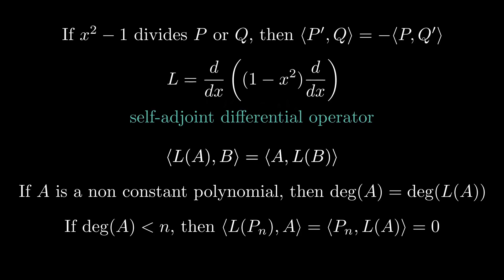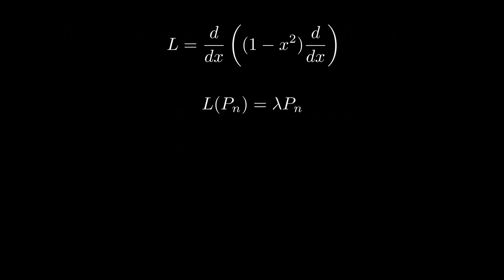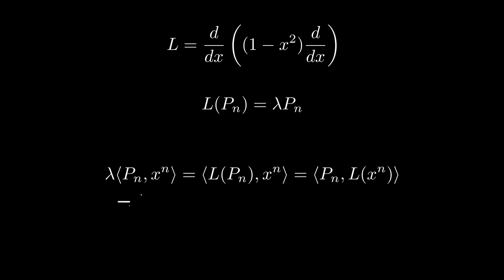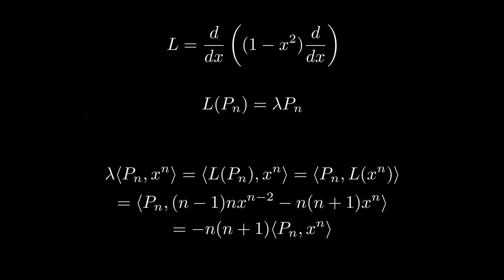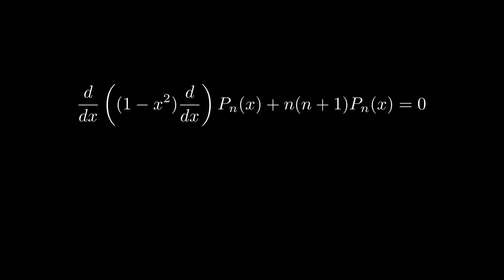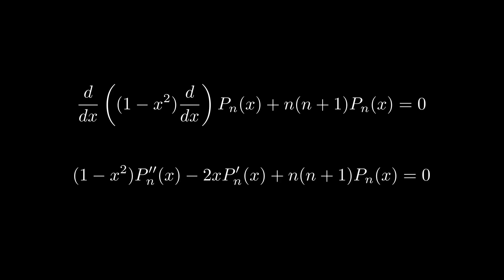So what happens if we pass some Legendre polynomial into L? When we take the inner product of this polynomial with some other polynomial, we can push L to the other side. We know that this is equal to 0 if the polynomial on the right has degree lower than n. But this means that L of Pn is a multiple of Pn. By taking the inner product with the nth power of x and evaluating L of x to the nth power, the lower powers of x vanish since they are orthogonal to Pn. Finally, we obtain that lambda is equal to minus n times n plus 1. This means that the nth Legendre polynomial satisfies Legendre's differential equation, which turns up in physics when solving the Laplace equation in spherical coordinates.